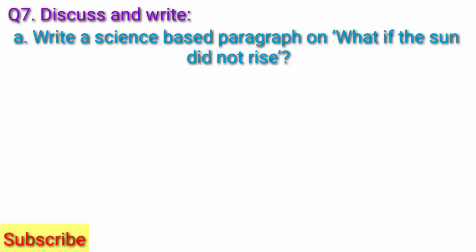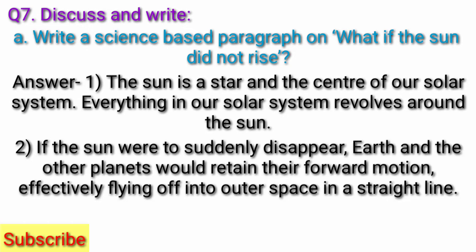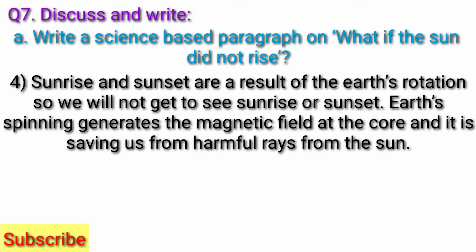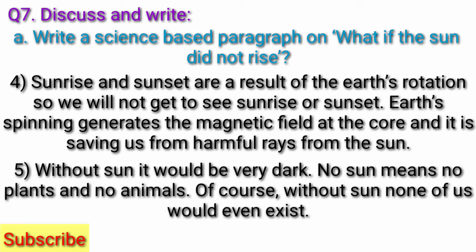Question 7. Discuss and write. Question A: Write a science-based paragraph on 'What if the sun did not rise?' Answer: The sun is a star and the center of our solar system. Everything in our solar system revolves around the sun. If the sun were to suddenly disappear, Earth and the other planets would retain their forward motion, effectively flying off into outer space in a straight line. If the sun did not rise, it means the Earth's rotation had come to a screeching halt. Sunrise and sunset are a result of the Earth's rotation, so we would not get to see sunrise or sunset. Earth's spinning generates the magnetic field at the core, saving us from harmful rays from the sun. Without sun, it would be very dark. No sun means no plants and no animals, and without the sun, none of us would even exist.